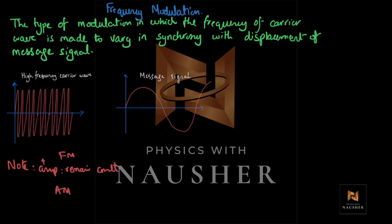The amplitude we're talking about is the carrier wave's amplitude. The message signal is dependent on the source and is not in our control, but the carrier wave's amplitude is in our control. So the amplitude of the carrier wave will remain constant when you're talking of FM. In AM, the frequency of the carrier wave remains constant throughout.